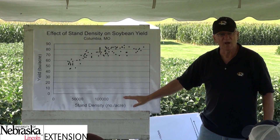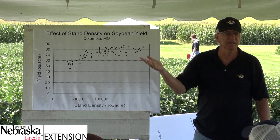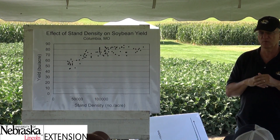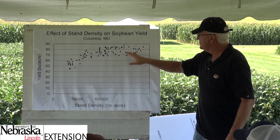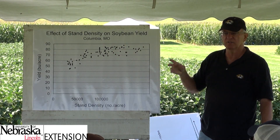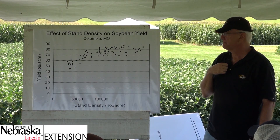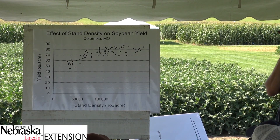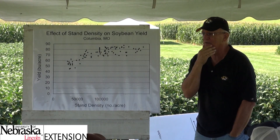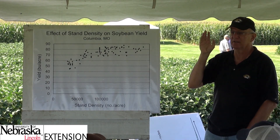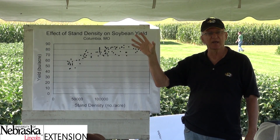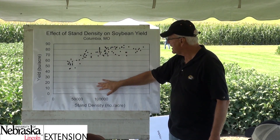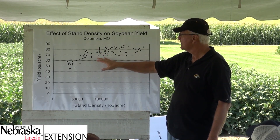Here we have stand density — actual plants per area. The way we do the study is we plant a whole bunch of different seeding rates — not five or six, but lots of different ones. We go out when the plant has about two or three leaves on it, count the stand, then harvest each plot. Each of these dots is a single plot — not averaged by rep — so you get a bit more noise. I've done this maybe 20 times, and it's almost always the same shape, whether in central Missouri or down in the boot heel. If we get up to around 90,000 plants out there, we've captured almost the maximum yield in that field.